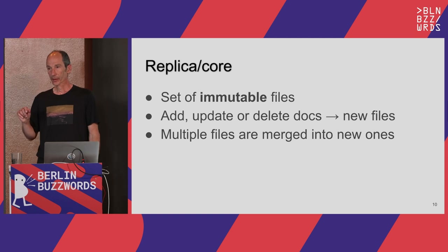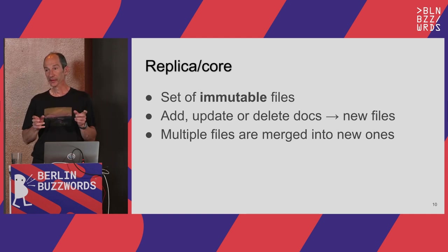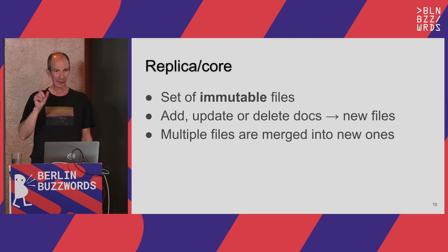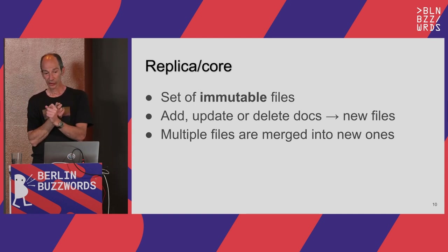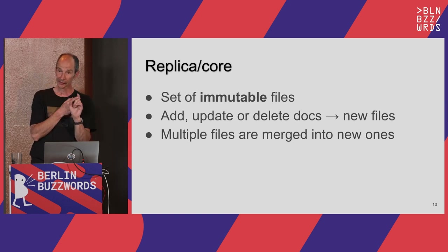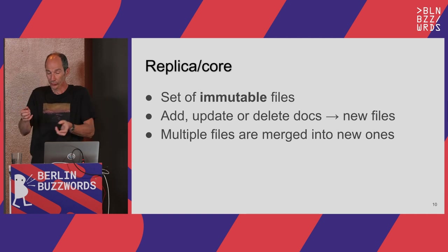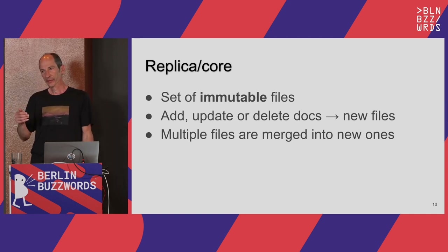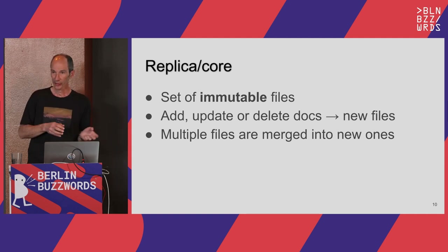There are three types of replicas in SolrCloud: NRT, Tlog, and Pull — but the names don't matter much. The differences between replica types are on four dimensions: what type of data they exchange; whether they all do indexing or just receive data; whether they can become a leader if the leader dies; and what the guarantees of read-after-write are — which are fuzzy for all types, but more fuzzy for some.